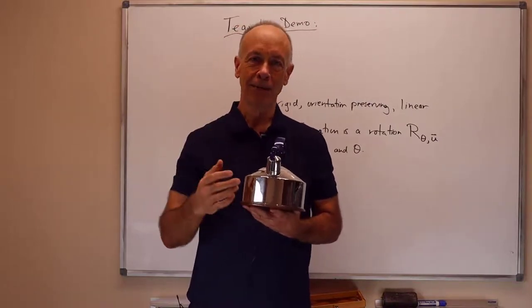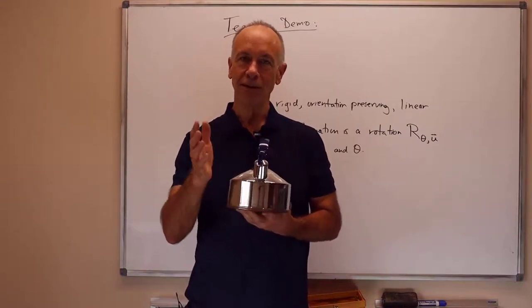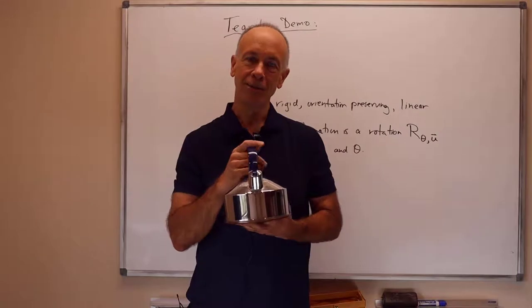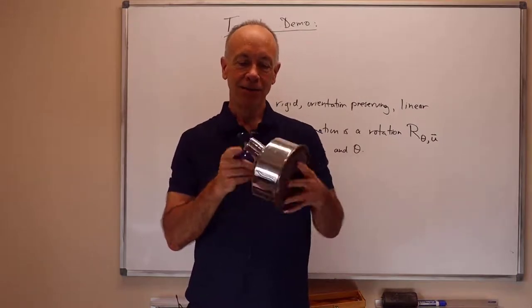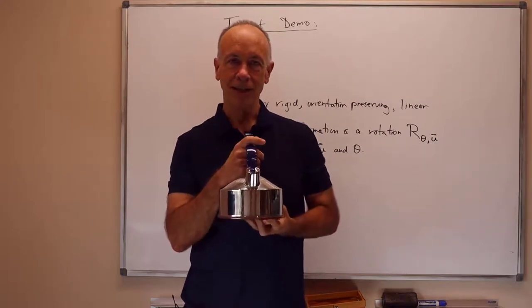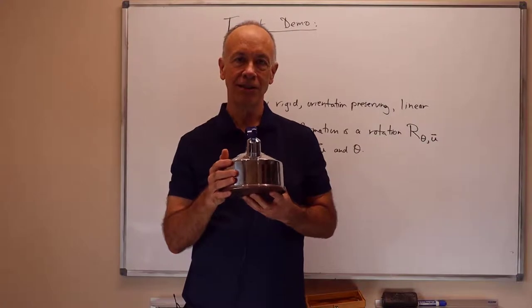We usually think about having a preferred up direction and so forth, and so a preferred forward direction for left and right direction because we're always facing in particular ways. But be that as it may, this theorem does tell us that we can always find a single axis of rotation to take a rigid object back to its starting configuration.